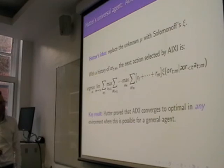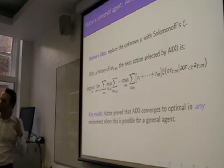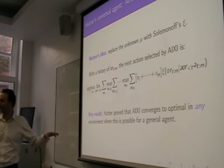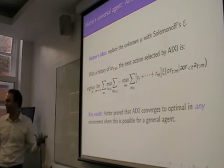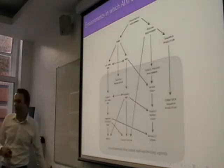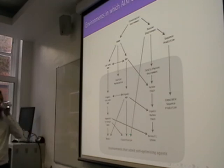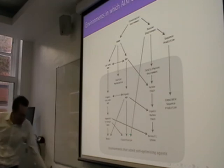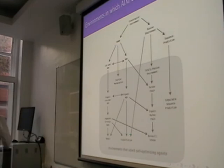And you can see that this sort of—it looks like it basically satisfies our informal definition of intelligence. We want to be able to achieve a wide range of goals in a wide range of environments. And this converges to optimal in any place where it's possible for a general agent. So it satisfies our definition of intelligence, in theory. This is not computable. So I wanted to sort of flesh this out a bit.